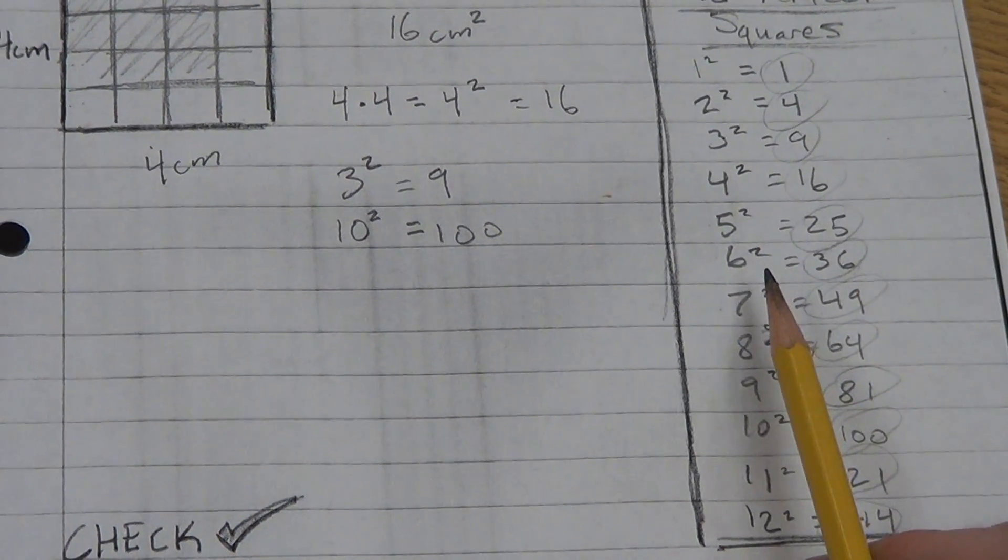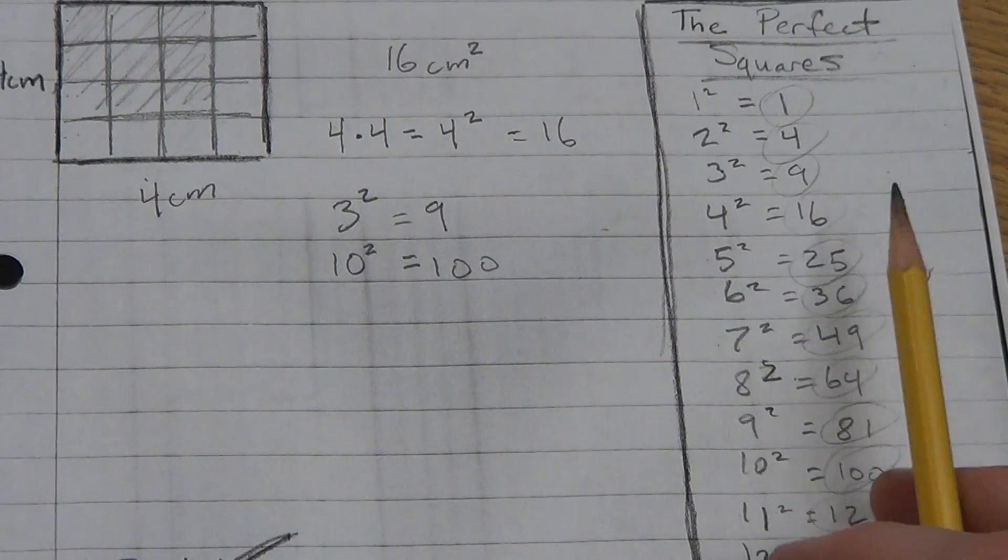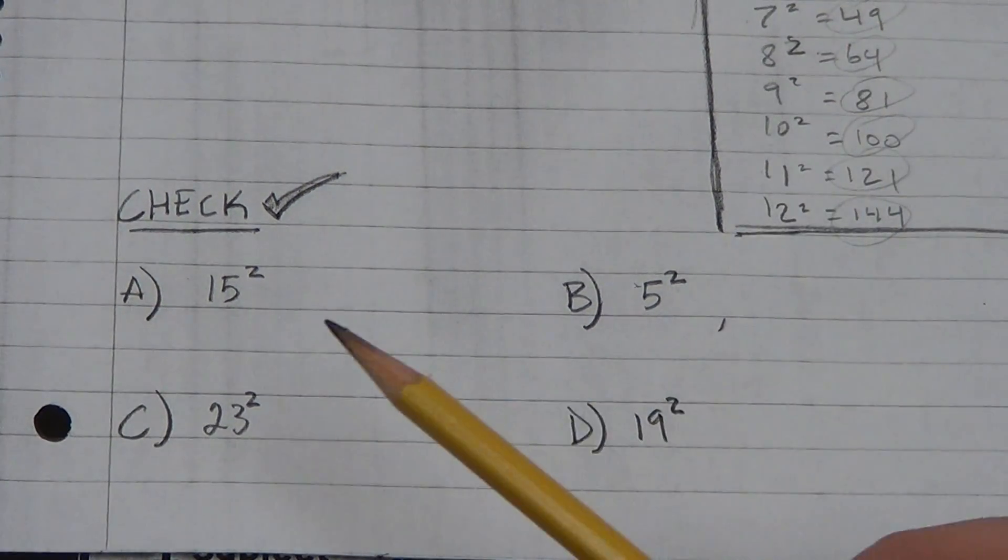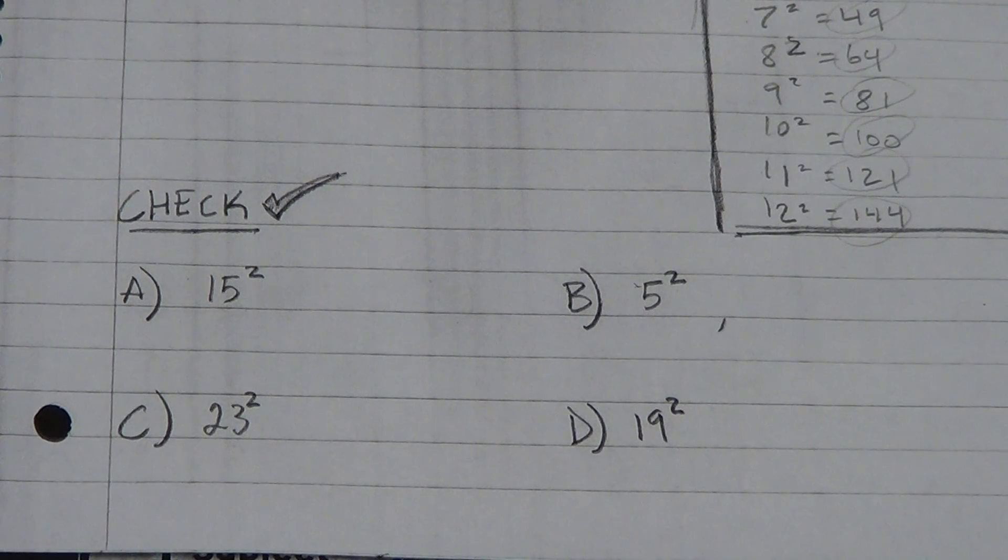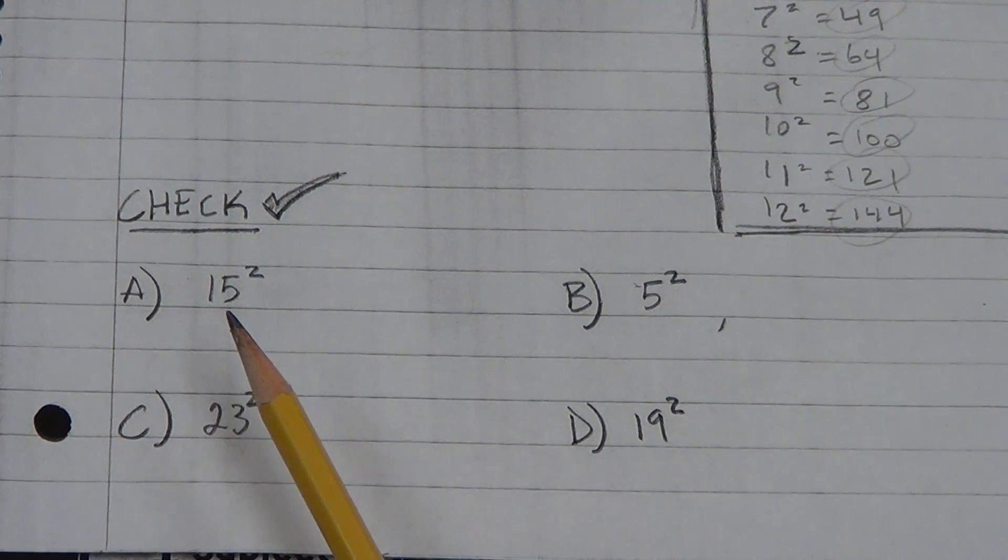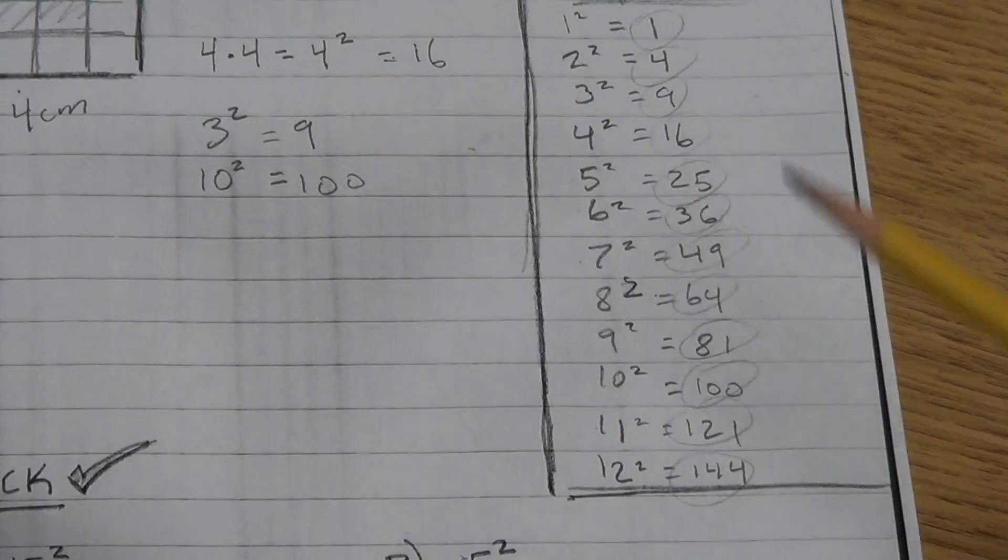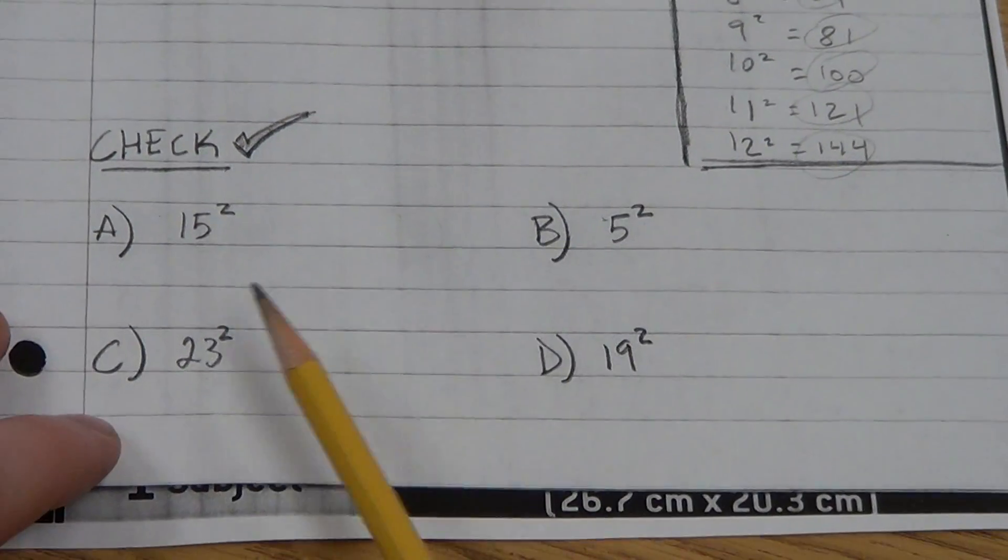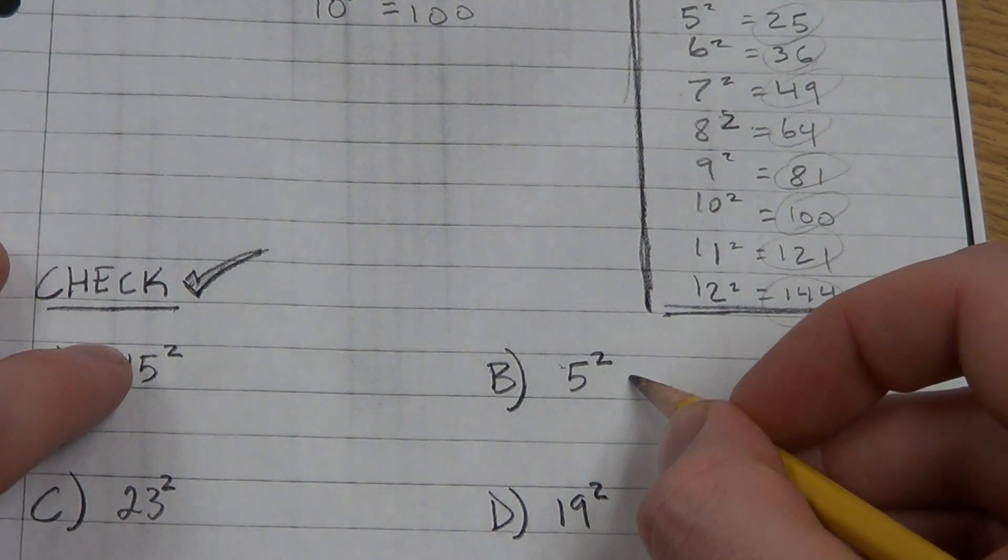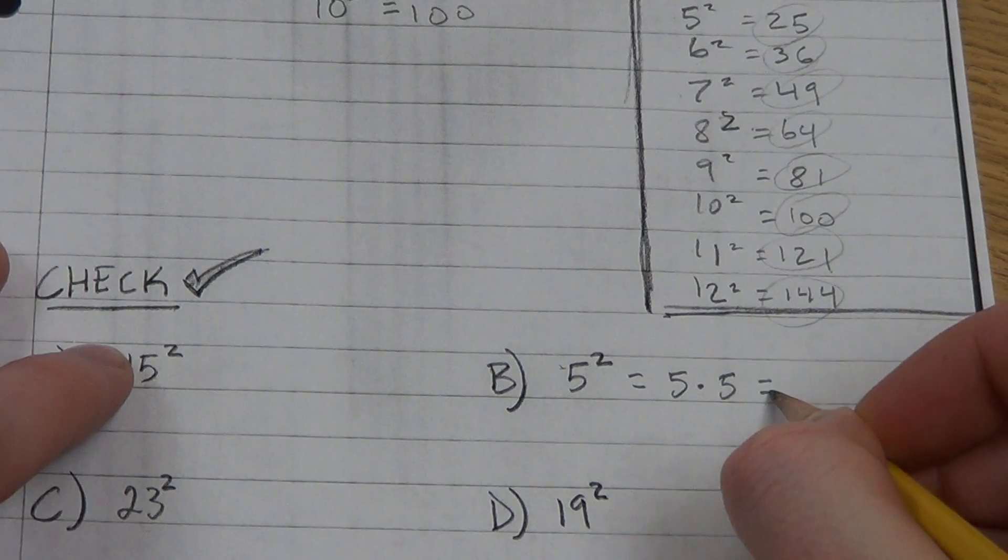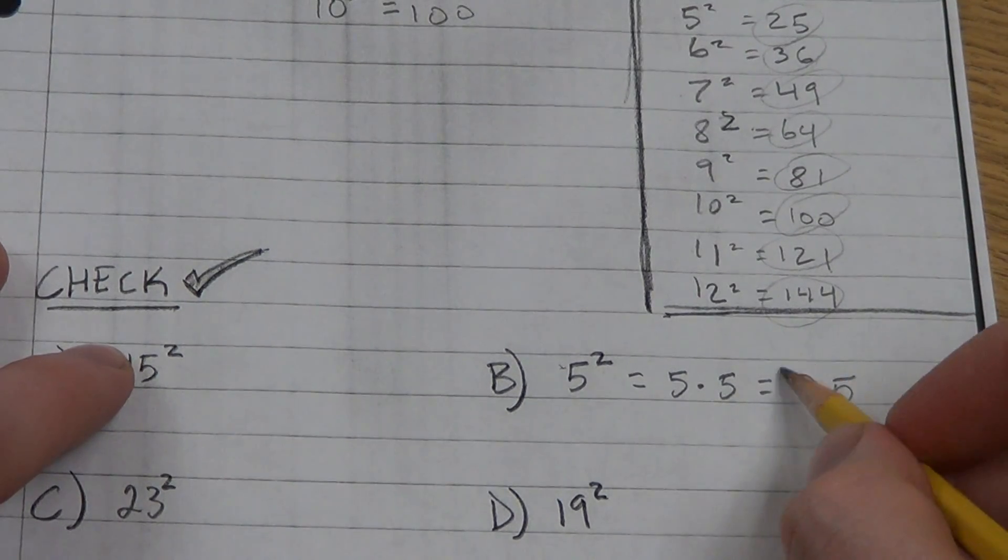Now, let's show you how to do this on a calculator. Here at the bottom I have a little check. I have 15 squared, 5 squared, 23 squared, and 19 squared. And I can already see I should know 5 squared. 5 squared, which means 5 times 5, is 25. That's what 5 squared is.